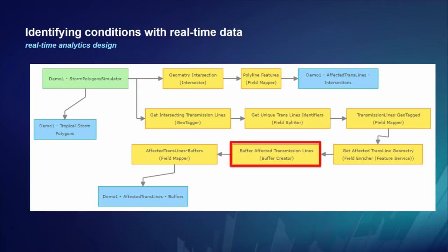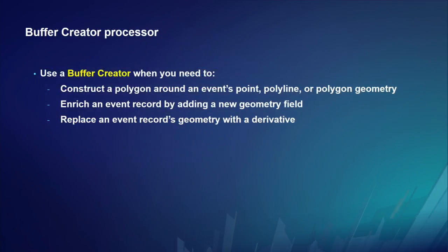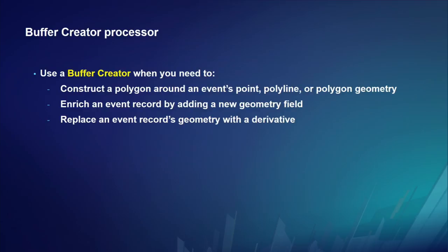A buffer creator is a geometry processor that does what you'd expect — it takes an event geometry and draws a buffer around it, constructing a polygon around a point, polyline, or polygon geometry. You can either enrich the event record with a second geometry or replace the original geometry with the buffer. This is key: geo-events can have more than one geometry and you can change their geometry, unlike feature records which must have a single consistent geometry type for a given feature service.